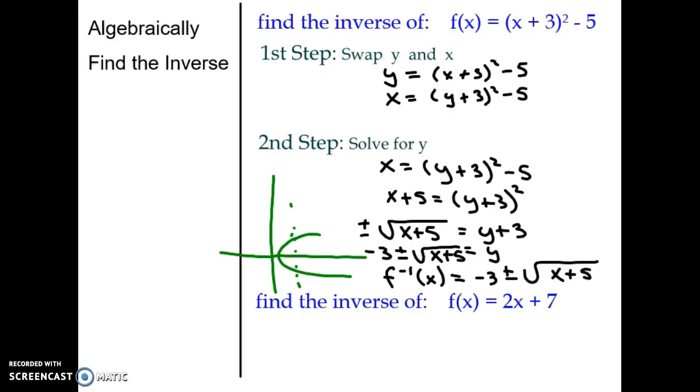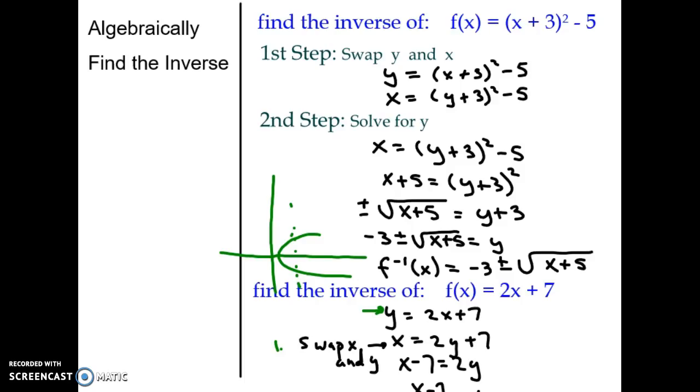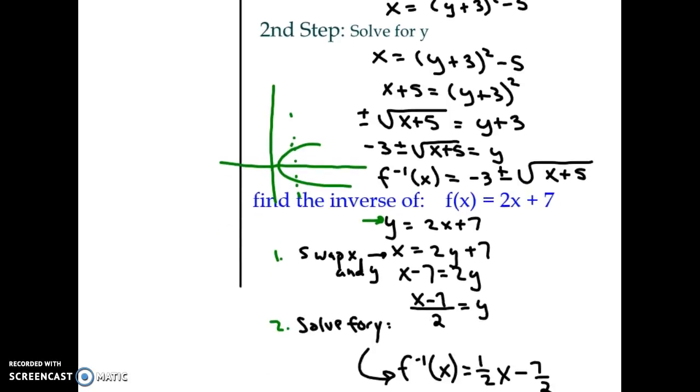Pause the video and try the next one. So this function was linear. It has a slope of positive one half and a y intercept of negative seven halves. So therefore, the inverse function is also a function.